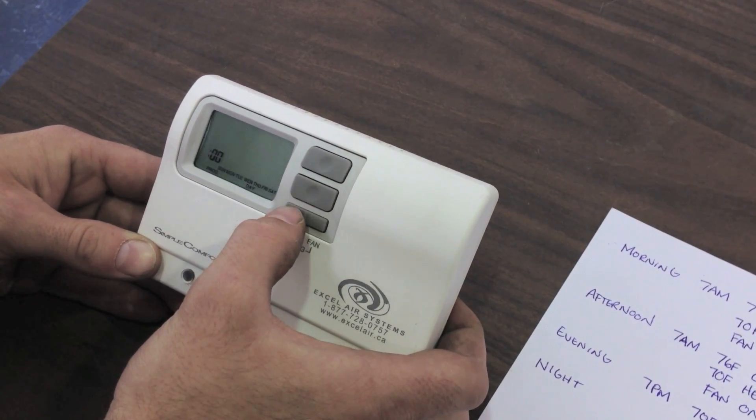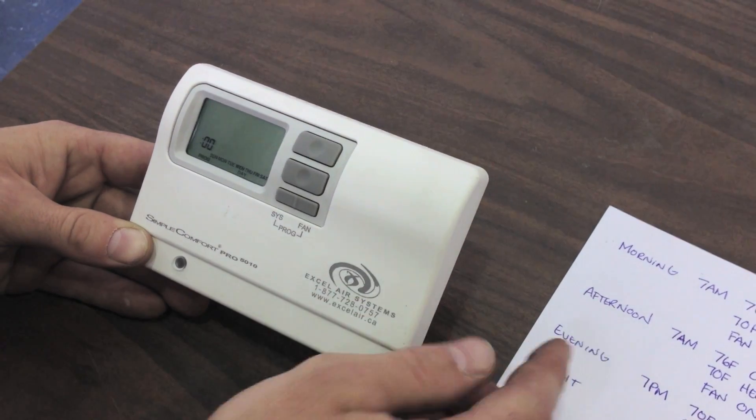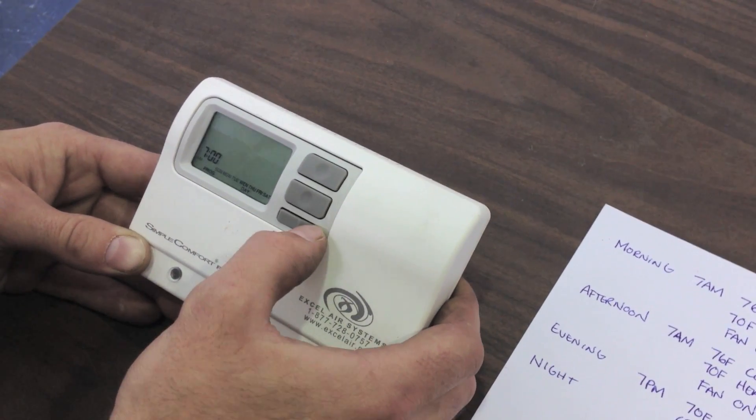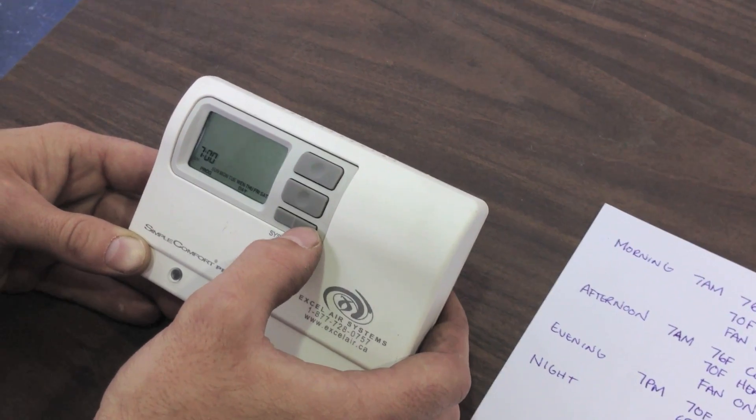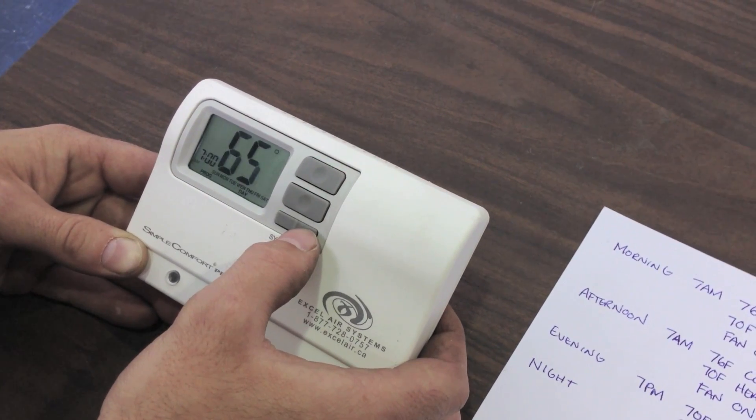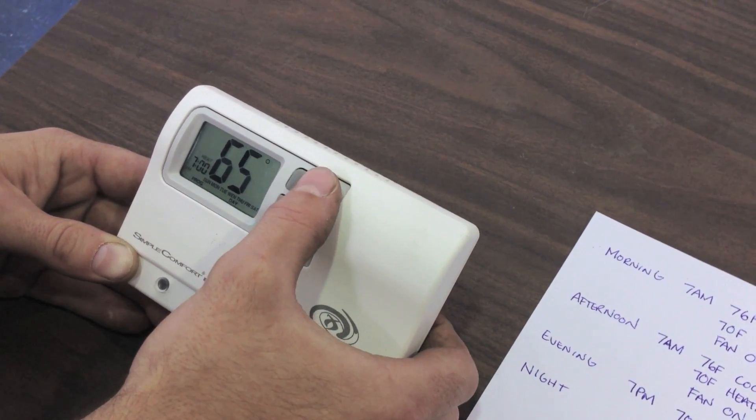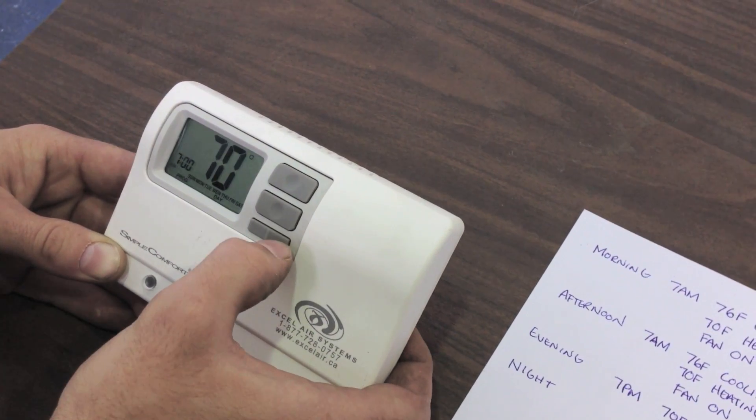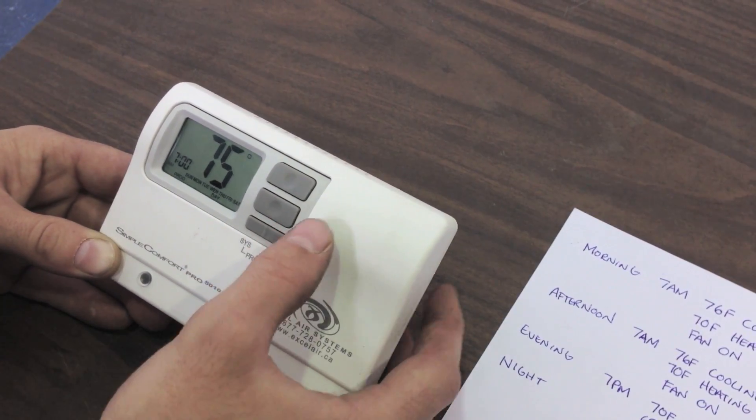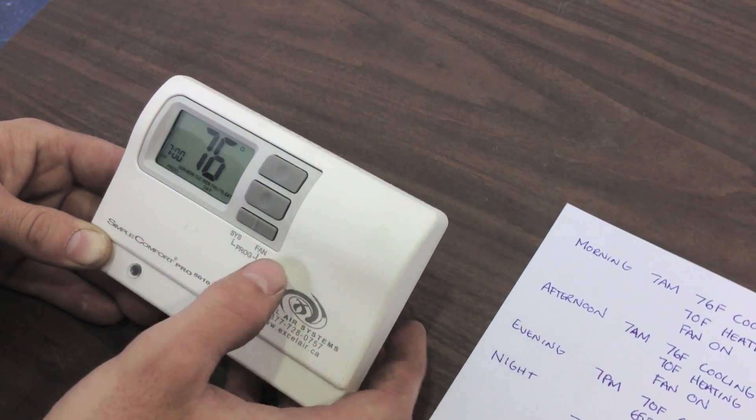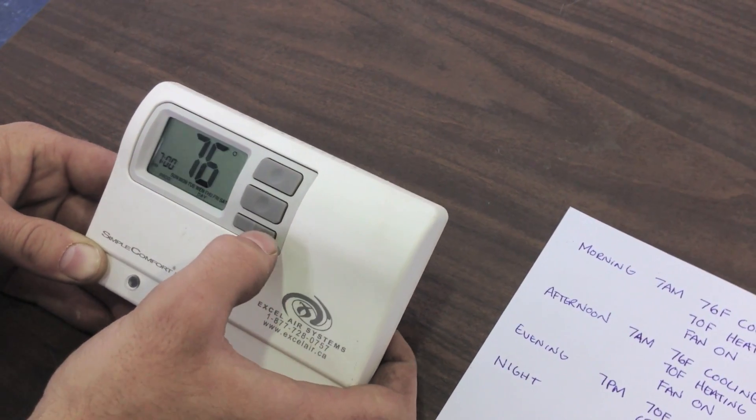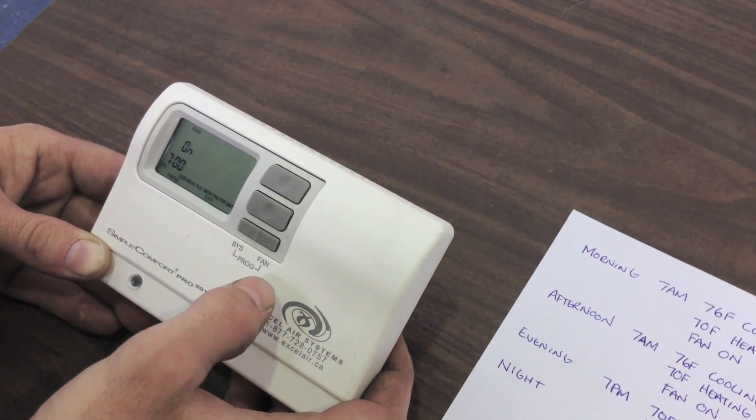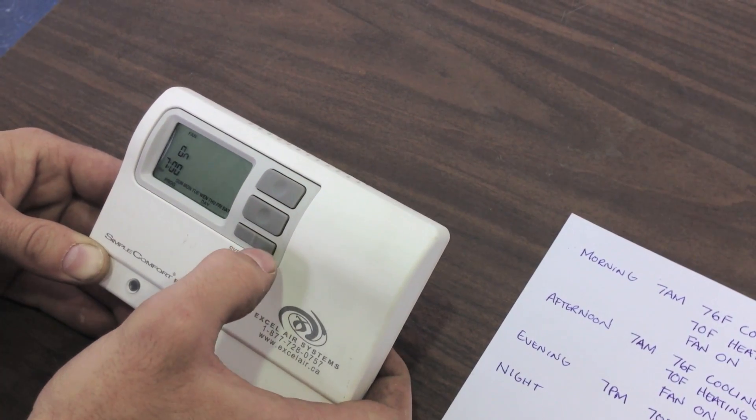So now we have our day schedule showing. So we're going to basically copy the morning schedule by setting it to 7 a.m. We're going to hit fan for next. Our minutes, we're okay. Push fan again. We have our heat set point, which we want it at 70. And then our fan again, which our cool should flash, and we want it for 76. We'll push our fan again. And the word fan is displayed with the on symbol, which is what we want. Push fan again.